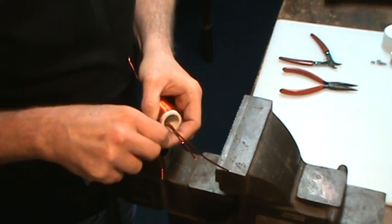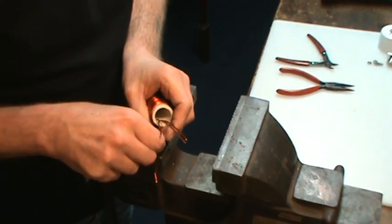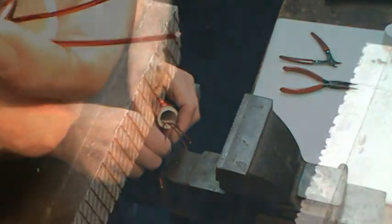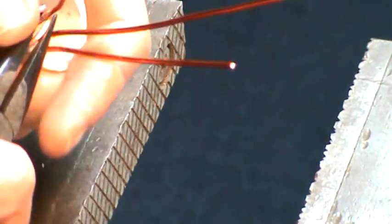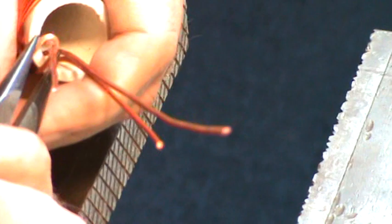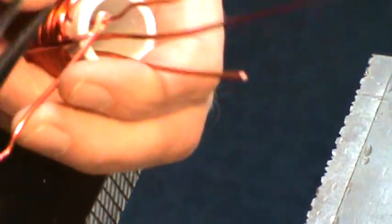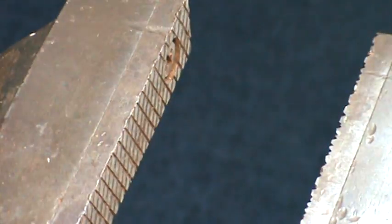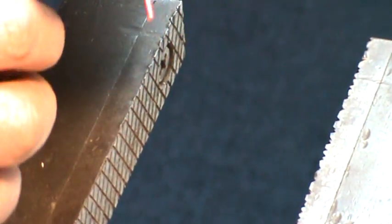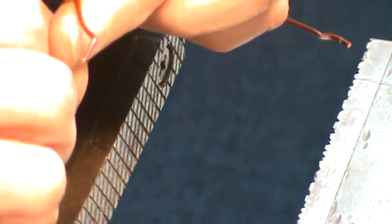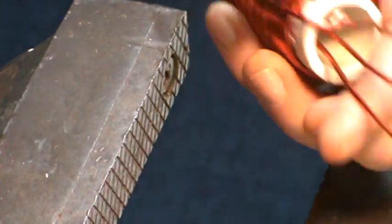Take the enamel coating off so that you can solder it and make a good electrical connection. Just give it a twist back like that.